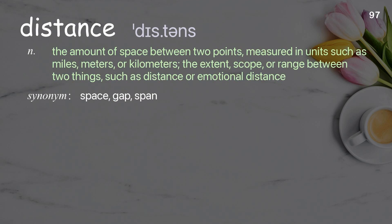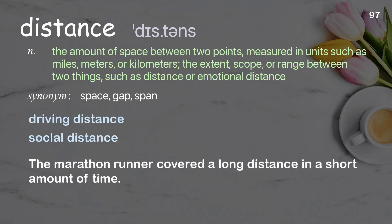Distance: the amount of space between two points measured in units such as miles, meters, or kilometers; the extent, scope, or range between two things, such as physical or emotional distance. The marathon runner covered a long distance in a short amount of time.